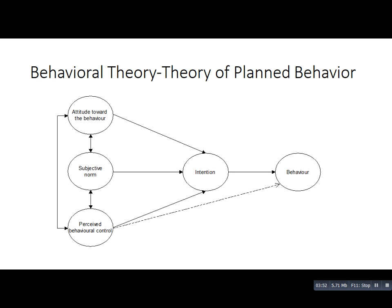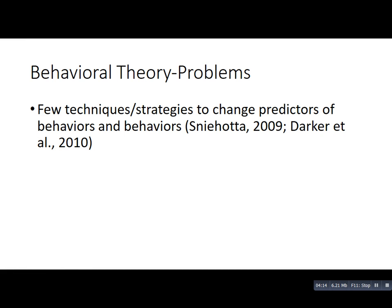The problem with these theories is that they basically only explain the behavior change process. They don't really tell you how to influence the predictors or constructs that lead to behavior change. For example, the theory of planned behavior tells you that perceived behavior control or self-efficacy is very important, but it doesn't tell you how to actually change perceived behavior control or self-efficacy. Few techniques and strategies are included in behavior change theories that would help explain how to change these predictors.